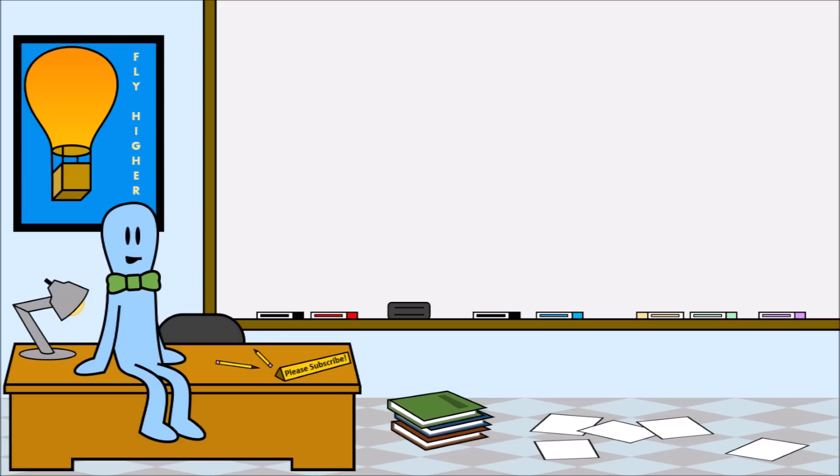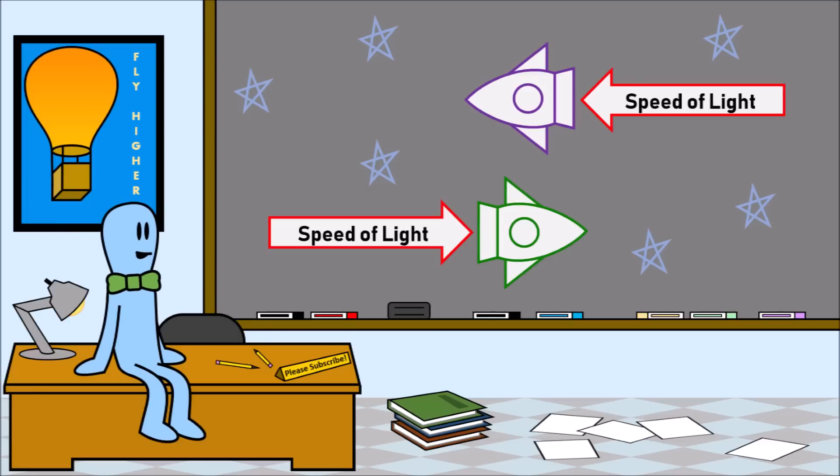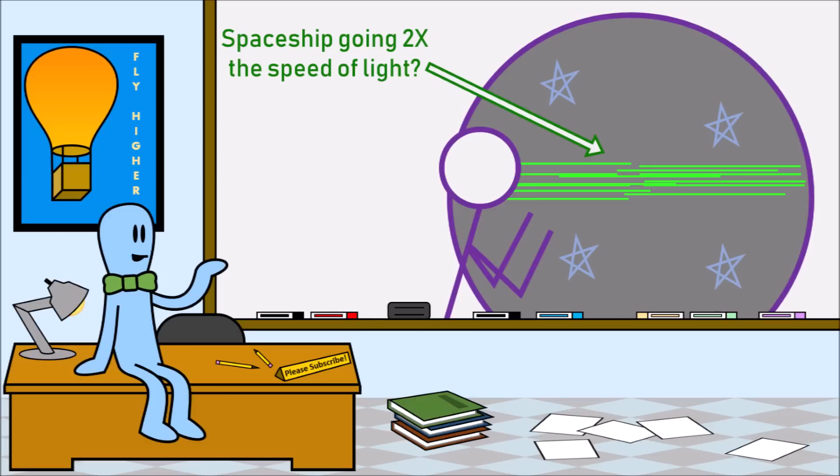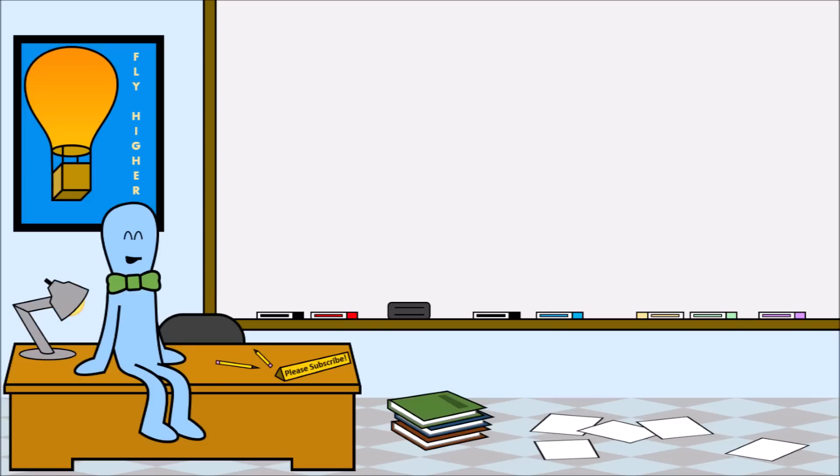The first time we met, he gave me a problem that blew my mind. There are two spaceships traveling at the speed of light in opposite directions. When they pass by each other, do they observe the other ship traveling at twice the speed of light? And by that logic, is it possible to go twice the speed of light, breaking the laws of physics that say nothing can go faster than light? And that's why he was my favorite teacher. I spent a lot of time on this problem, but eventually I came up with an answer.